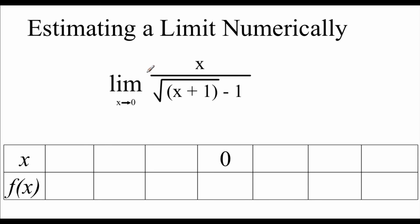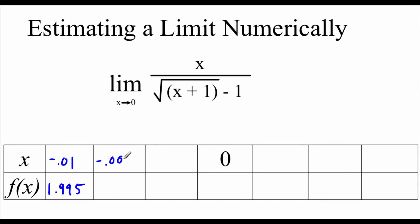We've got another limit to look at: the limit of x over the square root of x plus 1 minus 1, as x approaches 0. We're going to approach from both the left and right. Starting on the left-hand side at negative 0.01, plugging that in, we get 1.995. Moving closer to 0, we plug in negative 0.001 and get 1.9995.